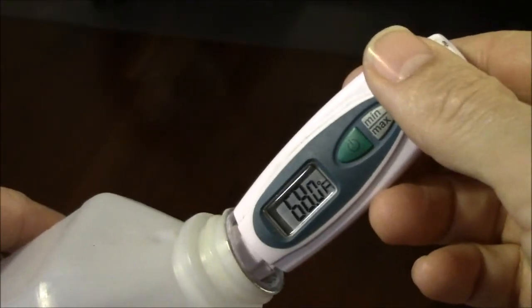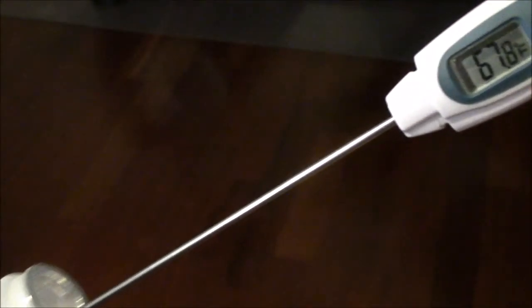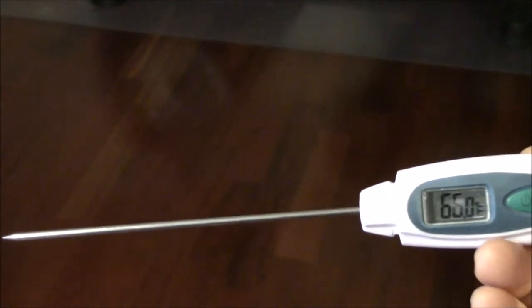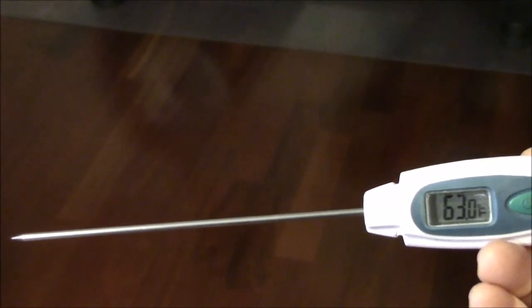So the temperature of the alcohol is about 68 degrees Fahrenheit. As I pull the thermometer out of the alcohol, we can see that the temperature starts to drop, rather dramatically.